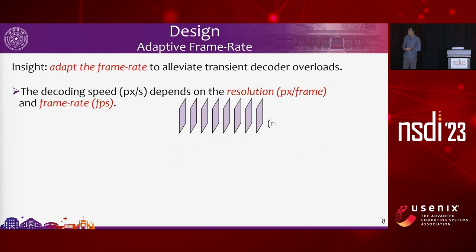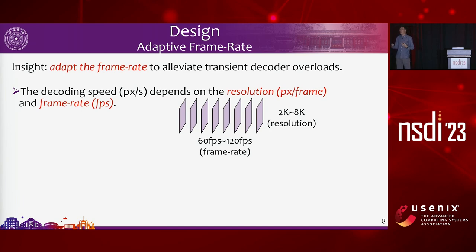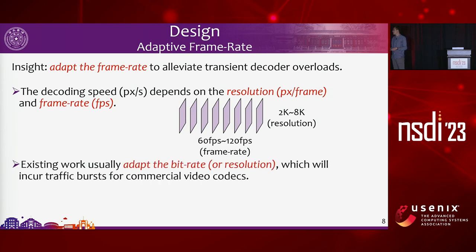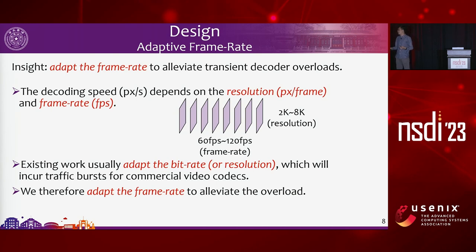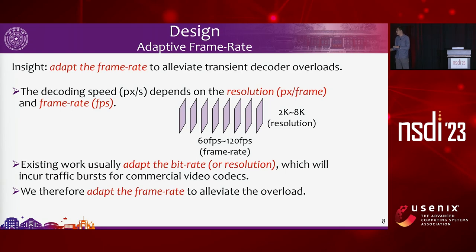Our main insight is that we can adapt the frame rate to alleviate transient decoder overloads. There are two parameters — resolution and frame rate — and we choose frame rate. Adapting resolution requires requesting a new keyframe, which causes a large traffic burst on the network and incurs additional end-to-end latency. Therefore, from practical concerns, we adapt the frame rate to alleviate the overload.